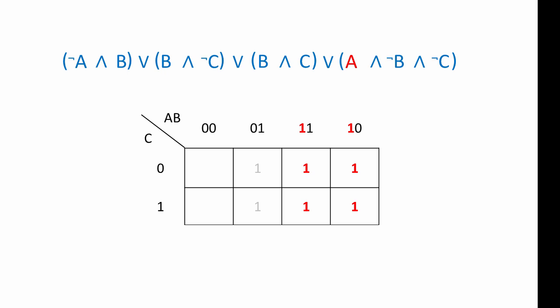This group of ones represents A — wherever there's a one, the value of input A is one. But of these four ones, only this pair represents A AND NOT B. Notice that for this pair, the value of input B is zero. And of these two, only this one represents A AND NOT B AND NOT C — the value of input C is zero. We now have all of our ones in place, and our Karnaugh map is complete.